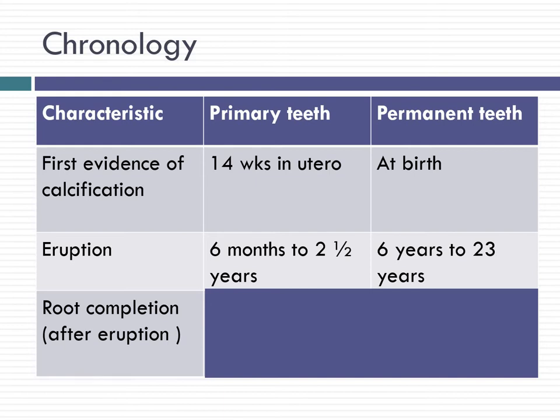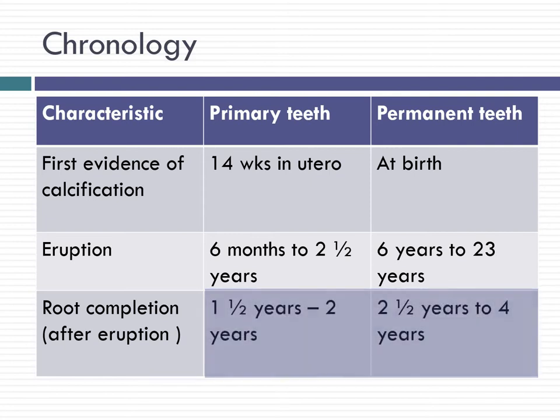Because of this sequential formation and eruption sequence, teeth have been used for age estimation procedures — primary teeth for children and permanent teeth for adults. Following eruption, the root is still not complete; it takes nearly 1.5 to 2 years for primary teeth to complete the root apex, whereas permanent teeth takes nearly 4 years after eruption for the apex to be complete.